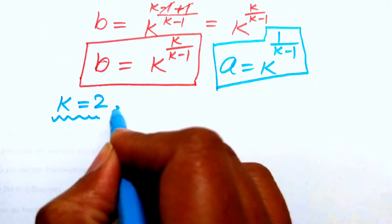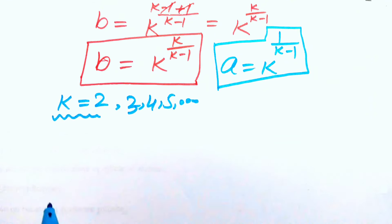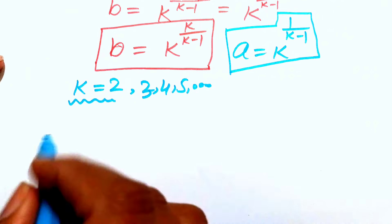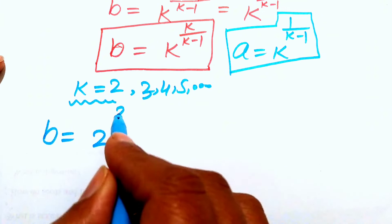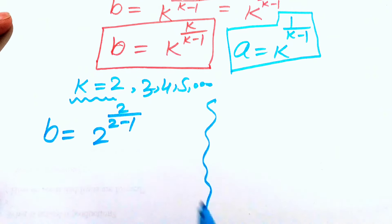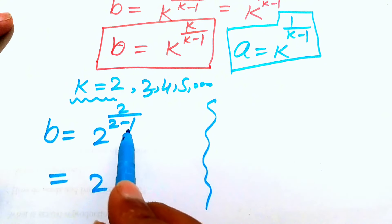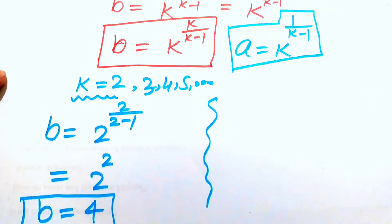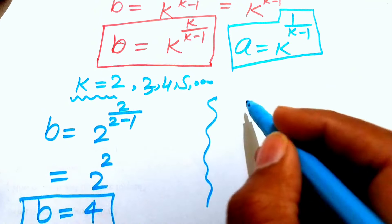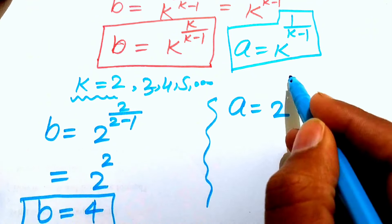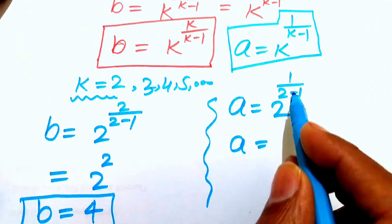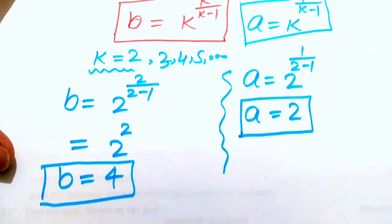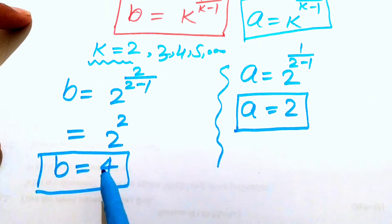For k equals two: b equals two to the power of two over (two minus one), which gives two to the power of two, so b equals four. And a equals two to the power of one over (two minus one), which is two to the power of one, so a equals two. When k equals two, we get a equals two and b equals four.